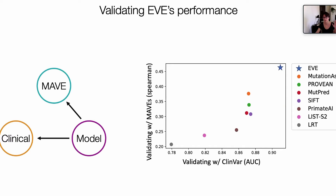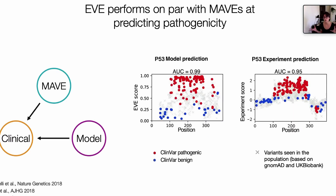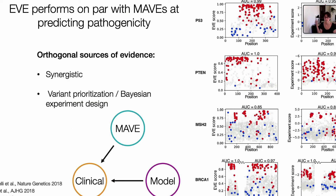We're talking about MAVEs as something that we can compare our model against for validation, but MAVEs also try to predict the pathogenicity of variants. So we can compare our performance at predicting pathogenicity with the performance of MAVEs predicting the same thing. This is shown here for P53 — on the x-axis is position along sequence space, the y-axis is the score of our model where one is more pathogenic, and this is the experimental score from one of the experiments from Giacomelli et al. These dots are pathogenic and benign labels from ClinVar. Our AUC is slightly higher than the experiments, and when we look across many different MAVEs, we find that systematically our model performs on par with experiments.